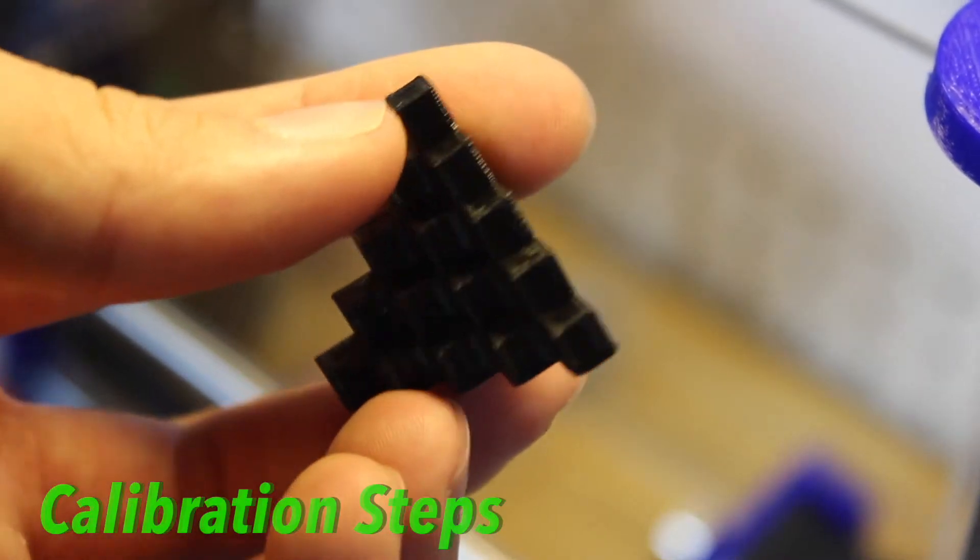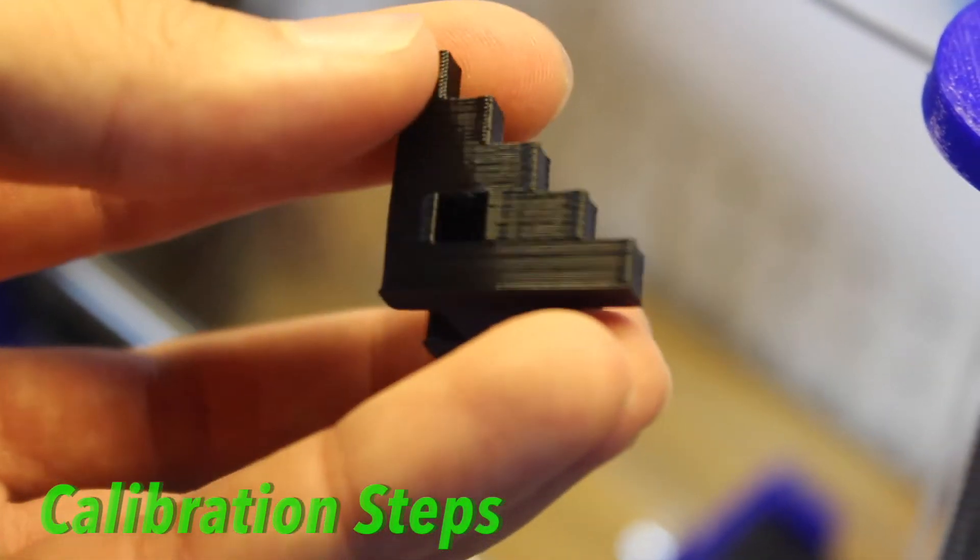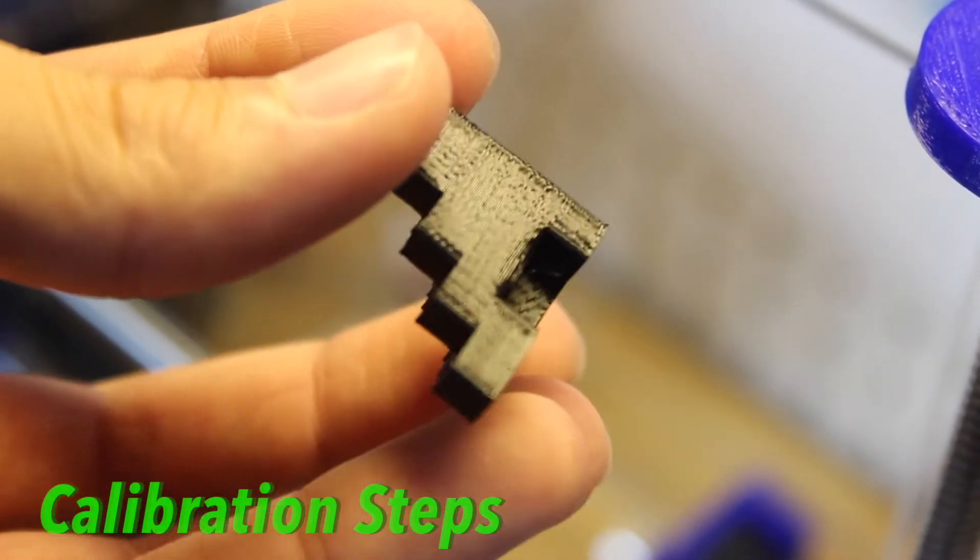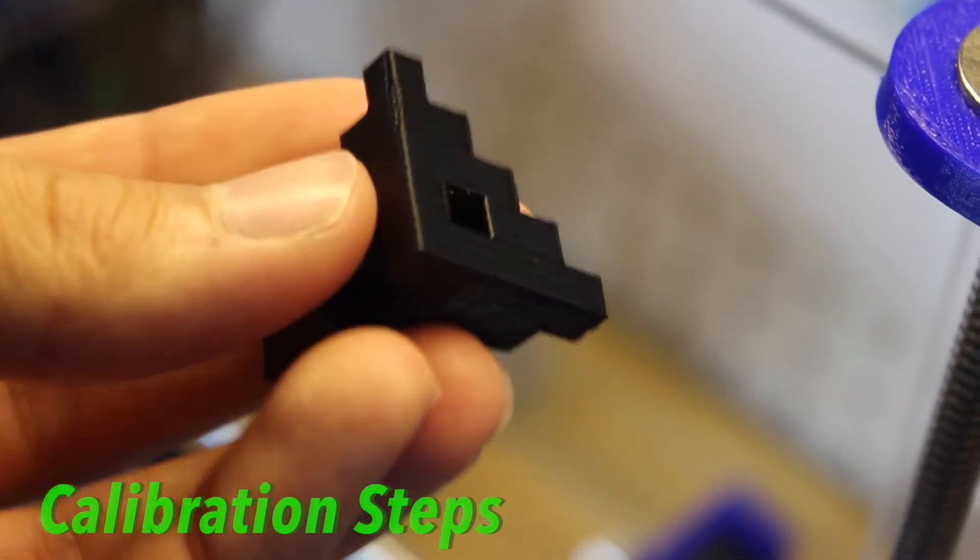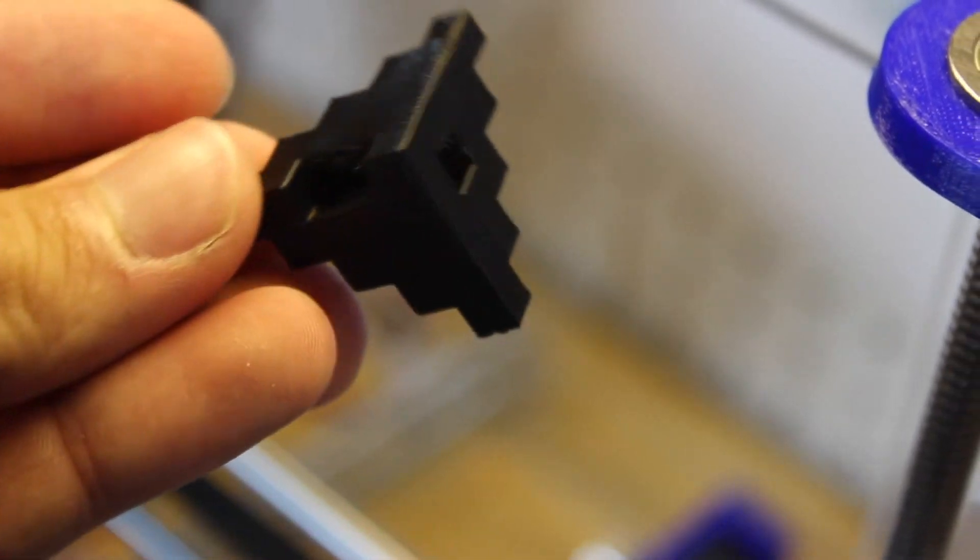The next print, like I usually do, is print some calibration steps with the Fusion filament. Also this came out pretty well, and the finish again was a shiny black finish which looks pretty cool.